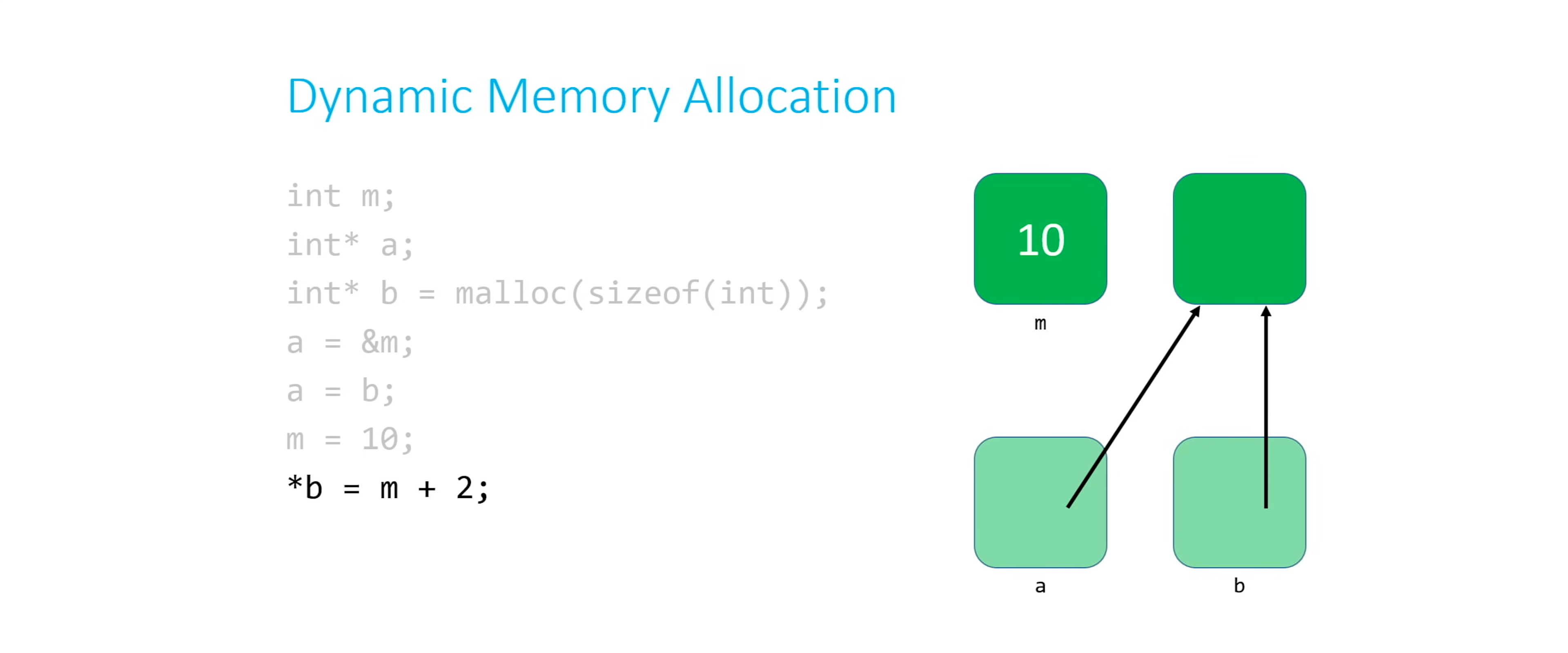When I say star b, I'm dereferencing b. So I'm going to travel along the arrow to where b points. And I'm going to put 12 in that location, OK?